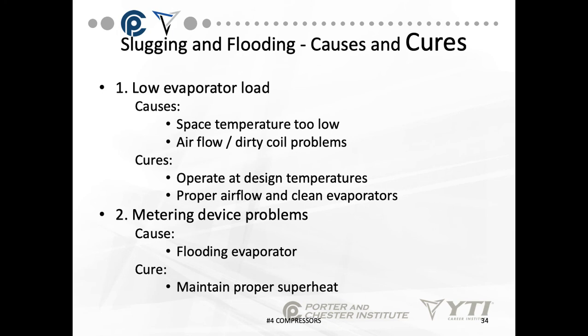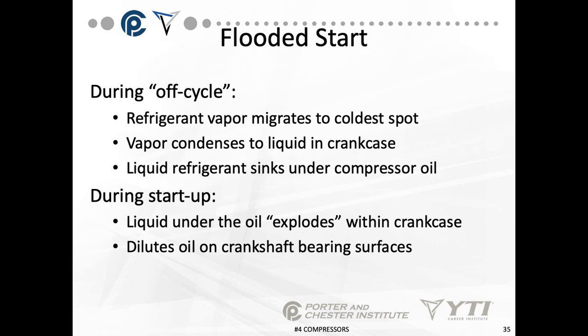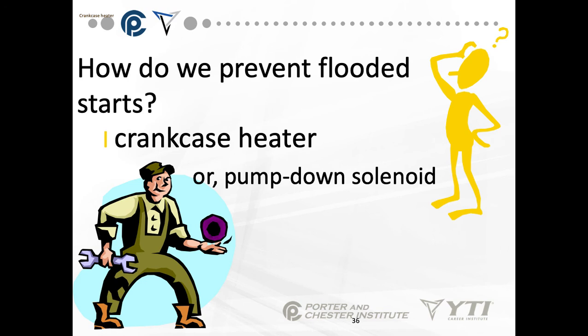Causes and cures for slugging and flooding: low evaporator load — caused by space temperature too low, airflow problems, or dirty coil — is cured by operating at design temperatures with proper airflow and clean evaporators. Metering device problems can cause a flooded evaporator; the cure is to maintain proper superheat. The key points are clean equipment, operation within design specifications, and superheat held at 8 to 12 degrees. During the off cycle, refrigerant vapor migrates to the coldest spot and condenses to liquid in the crankcase. During startup, the liquid under the oil expands rapidly, diluting oil on crankshaft bearing surfaces. Prevention of flooded starts uses a crankcase heater or a pump-down solenoid.